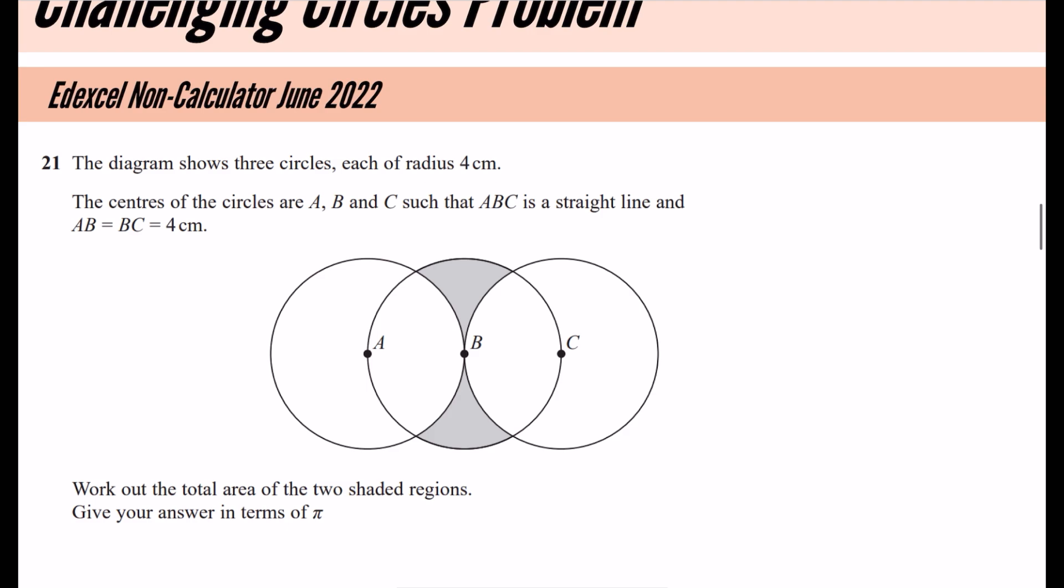So it's a very challenging circles problem. It's a non-calculator one, and it's from June 2022. The diagram shows three circles, each of radius four centimeters. The centers of the circles are A, B and C, such that A, B and C is in a straight line, and AB is equal to BC is equal to four centimeters. Obviously, it's going to be four centimeters, because these are all radii of the circle. All of those distances are going to be four centimeters.